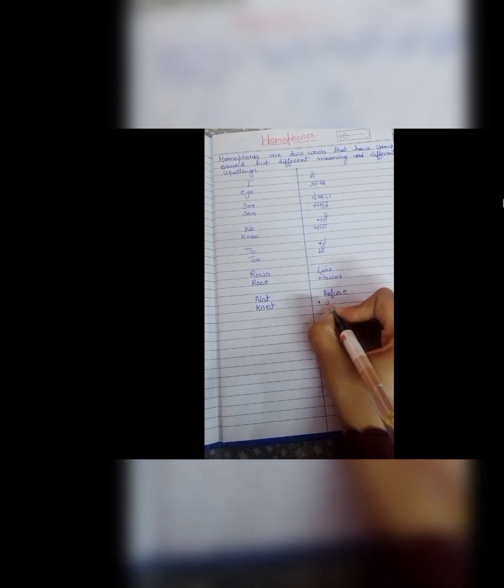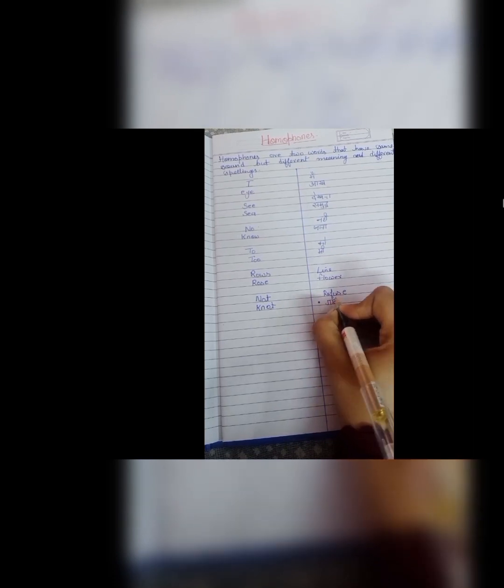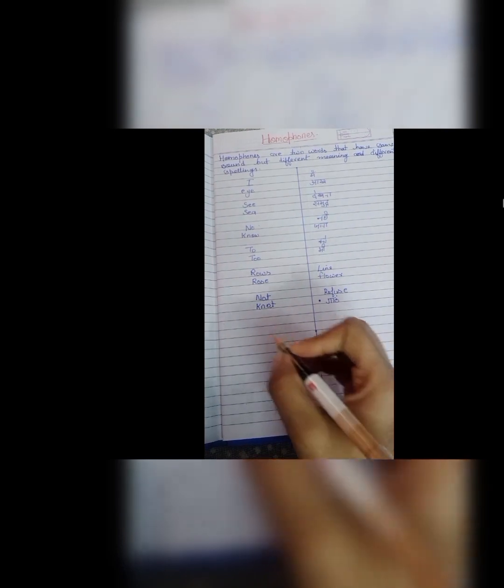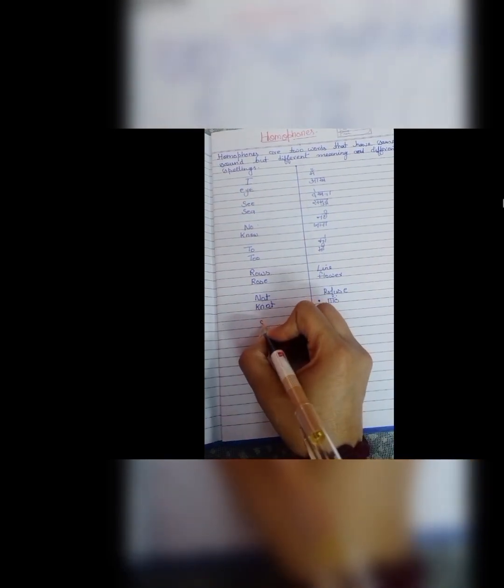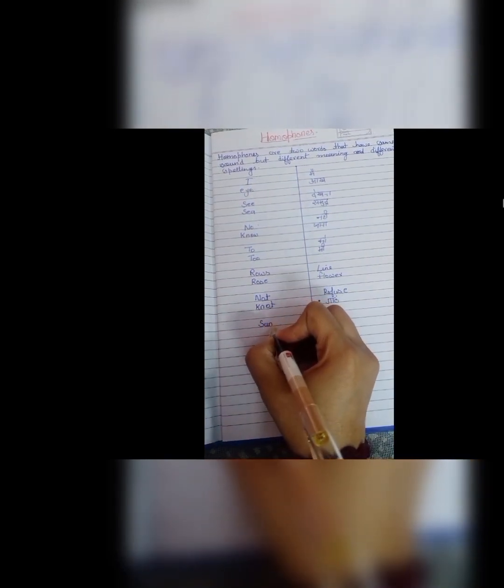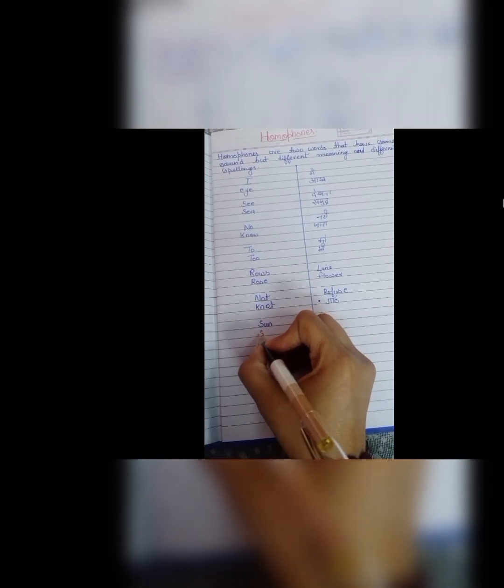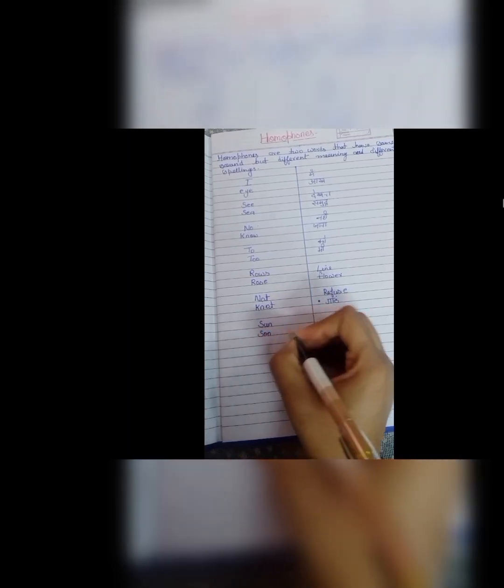Next is not and knot. N, O, T, not means aap refuse karna kisi chiz ke liye. No and not. And next is iska homophone hai knot. K, N, O, T, knot. Gaat baandhana kisi chiz me. Knot laga dena kisi chiz ko. Gaat.